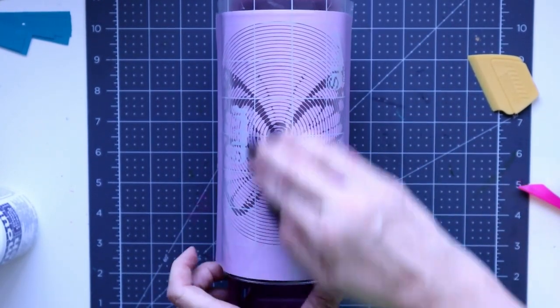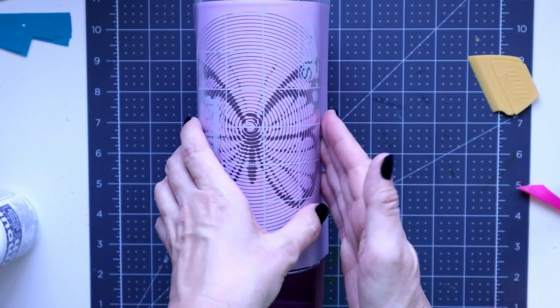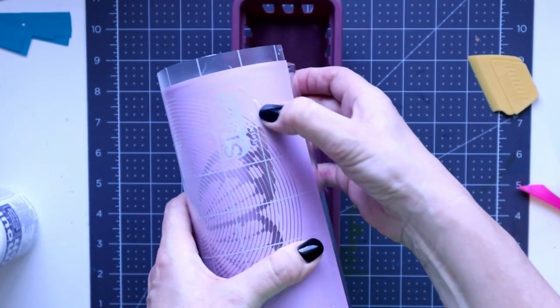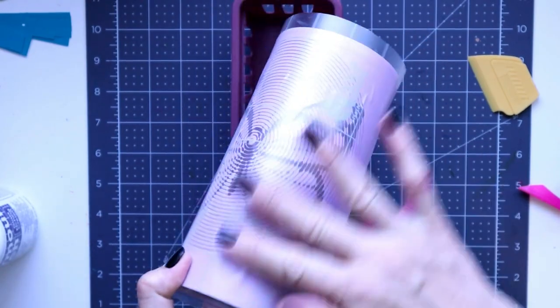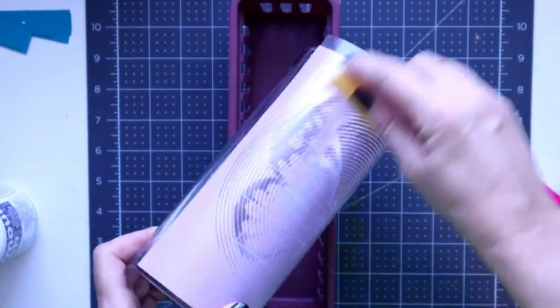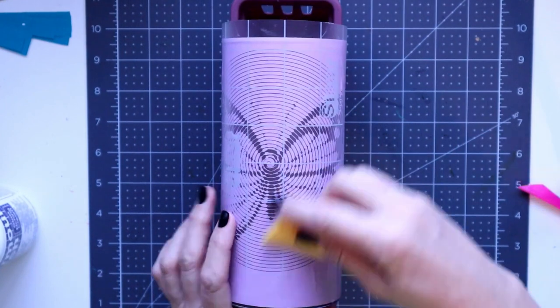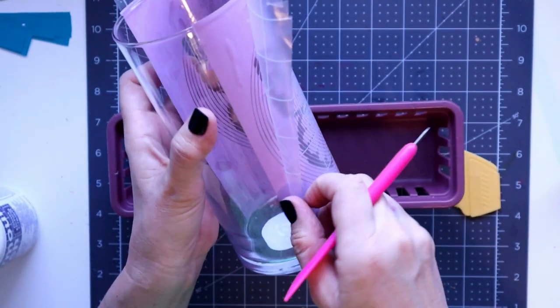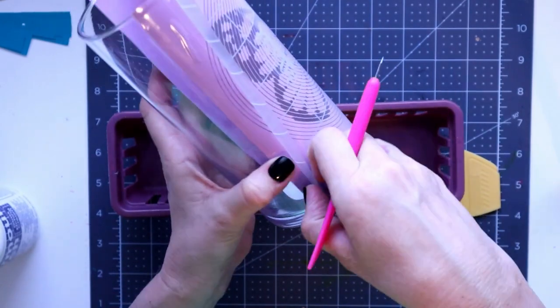Now we do need to make sure that this is applied onto the glass completely, otherwise the Armor Etch will kind of seep underneath it. And then I'm going to peel back the transfer tape leaving the vinyl on the vase.